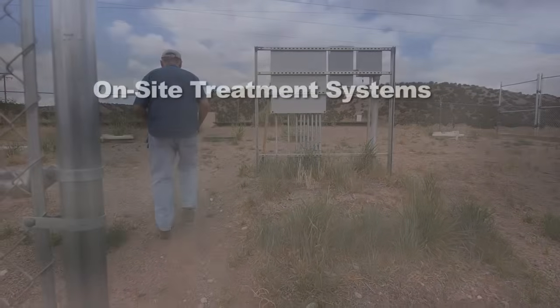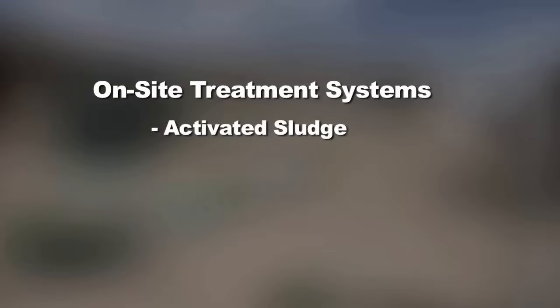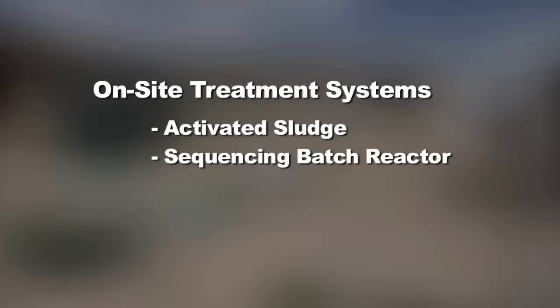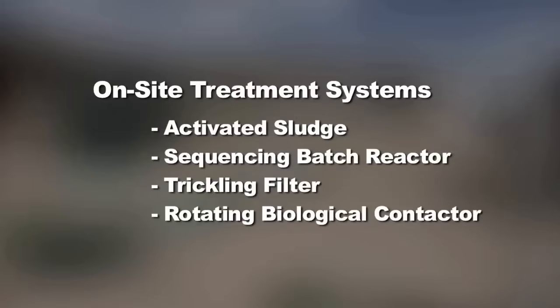Another type of on-site treatment system is an activated sludge process. There can be sequencing batch reactors, which are another type of activated sludge process where all the treatment and clarification takes place in one tank. There are also small trickling filter type on-site systems and rotating biological contactors. Some of these on-site systems are hybrids that utilize two or three different types of these processes in one package unit.